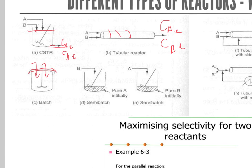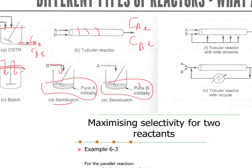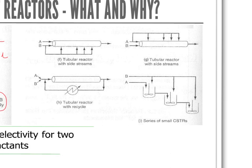The next reactor type is the semi-batch reactor, where either we have pure A initially with B added slowly, or pure B initially with A added slowly during the reaction. Another configuration is the tubular reactor with side streams, where for example A goes only to the main inlet feed, but B is supplied both at the main inlet and at different points along the length of the flow reactor.